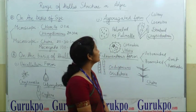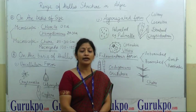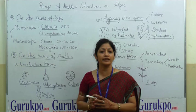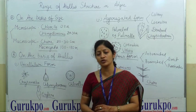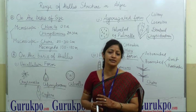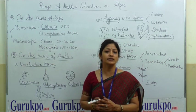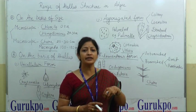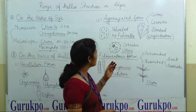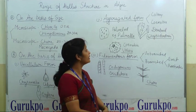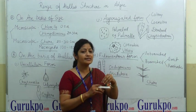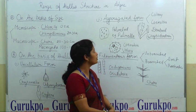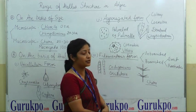Now we will discuss aggregated forms — algae in which different cells aggregate and form a colony or coenobium. If the number of cells are fixed in a colony, it is called a coenobium. These cells are joined together or embedded in a mucilaginous matrix. The first example is Palmella, in which the cells are scattered and embedded in mucilage, their number is not fixed, and hence they have no definite shape.